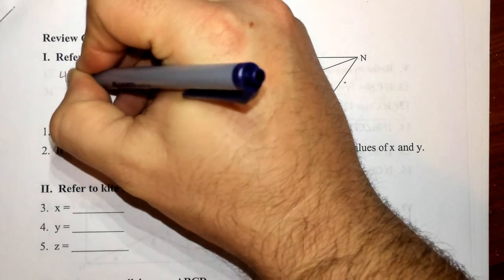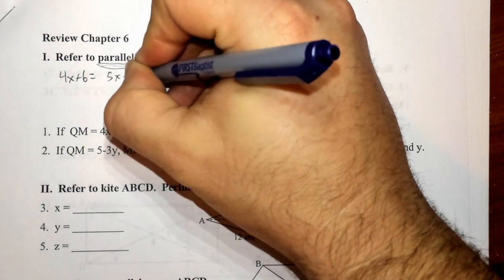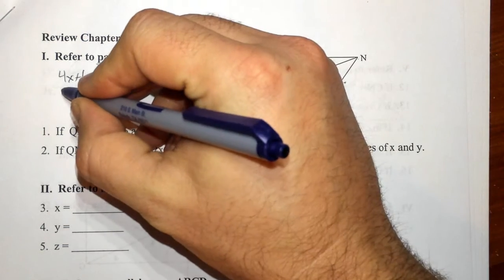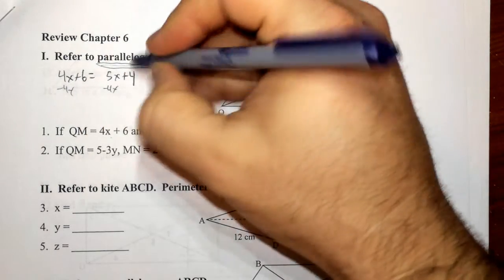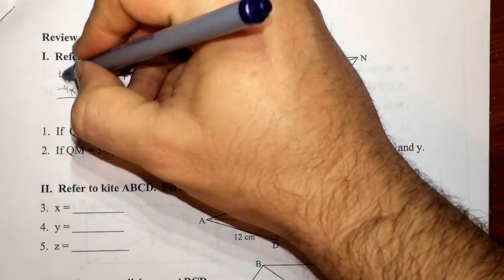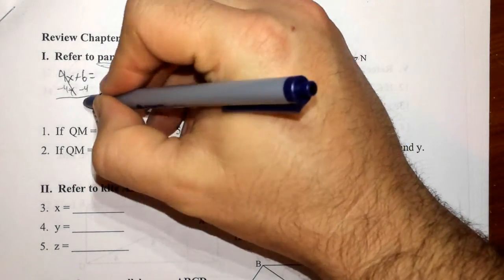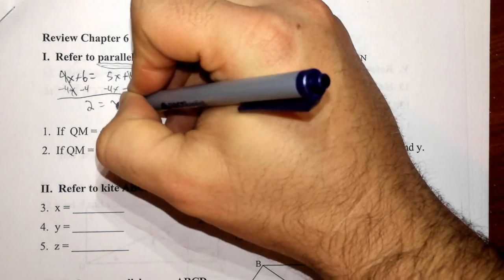So, 4X plus 6 is equal to 5X plus 4. Now, we're going to collect all of our X's on one side and numbers on the other. Let's go ahead and subtract 4X on both sides. And at the same time, subtract 4 from both sides. That's going to cause these two sets to subtract out. 6 minus 4 is 2, and 5X minus 4X is X.